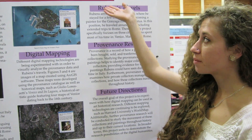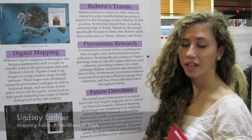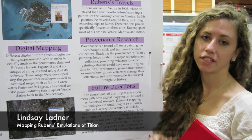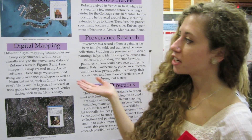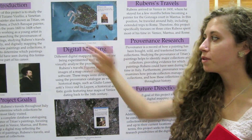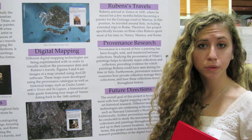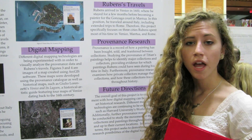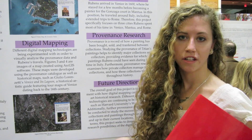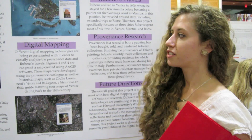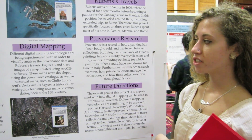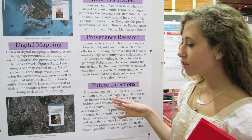My project is called Mapping Rubens' Emulations of Titian, and it's basically an art historical study on Rubens' life in Italy between 1600 and 1608. Rubens moved to Italy from Antwerp in Belgium as a young artist to study Renaissance art and the classical masters. During this time period, he worked as a court painter and traveled around.